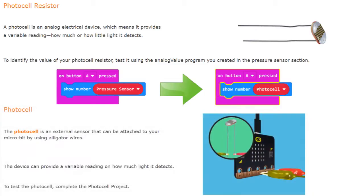Just like our flex sensor, our photocell is an external sensor that can be attached to our micro:bit using alligator wires. The device can also provide us with a variable reading on how much light it detects.